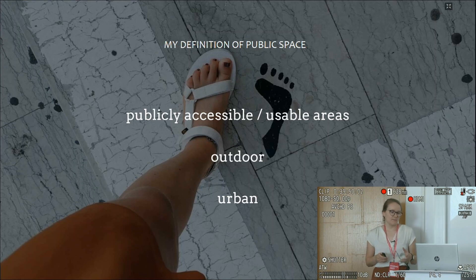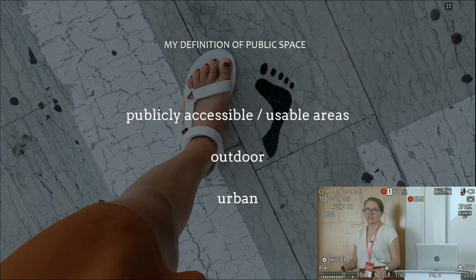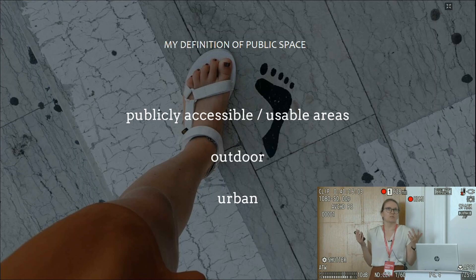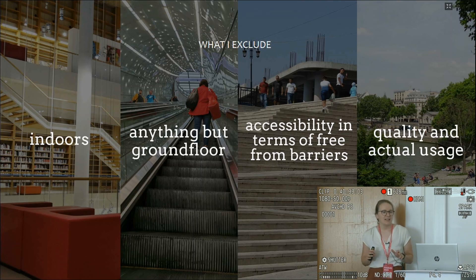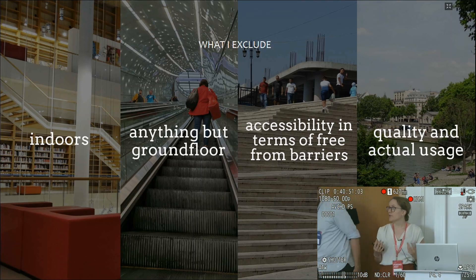What I ended up deciding for my context is to define public spaces as publicly accessible and usable areas — usable meaning I can go there and spend time there. That's also why I'm not considering traffic areas as public space, and I'm only considering outdoor spaces. The whole process only relates to the urban context. I exclude indoors, anything but ground floor, accessibility in terms of barrier-free mobility, and the actual quality or current use of a space. It's more about potential public space — what could be used as public space.